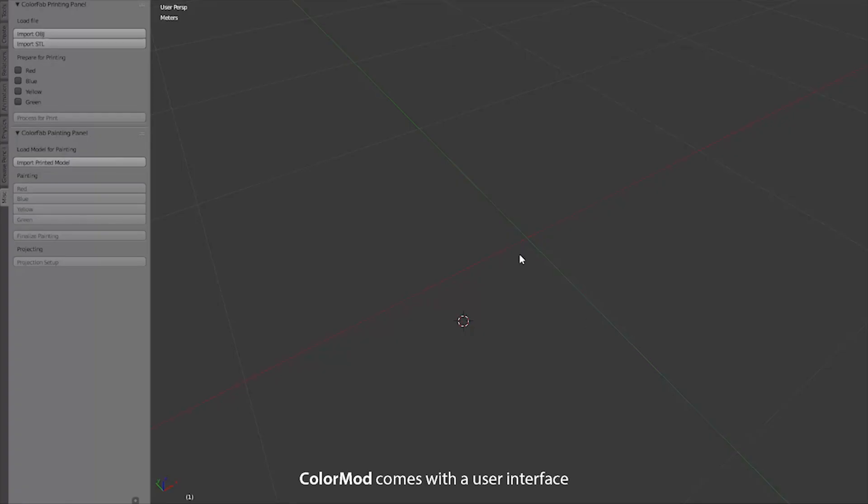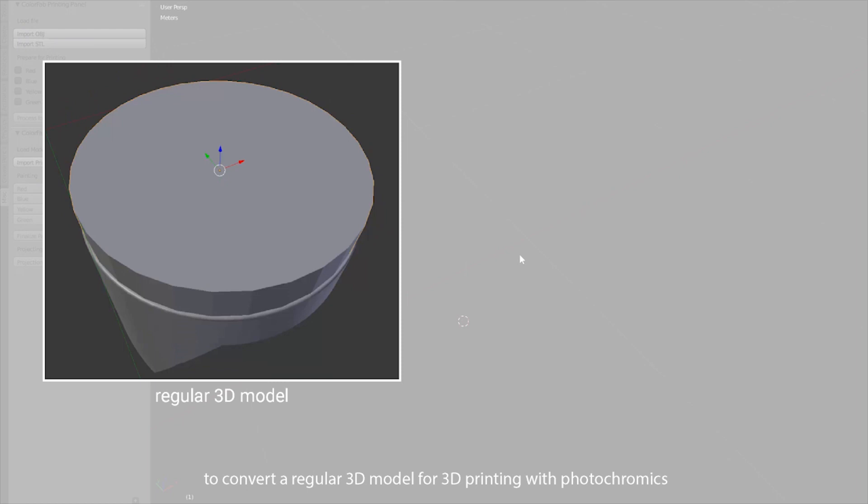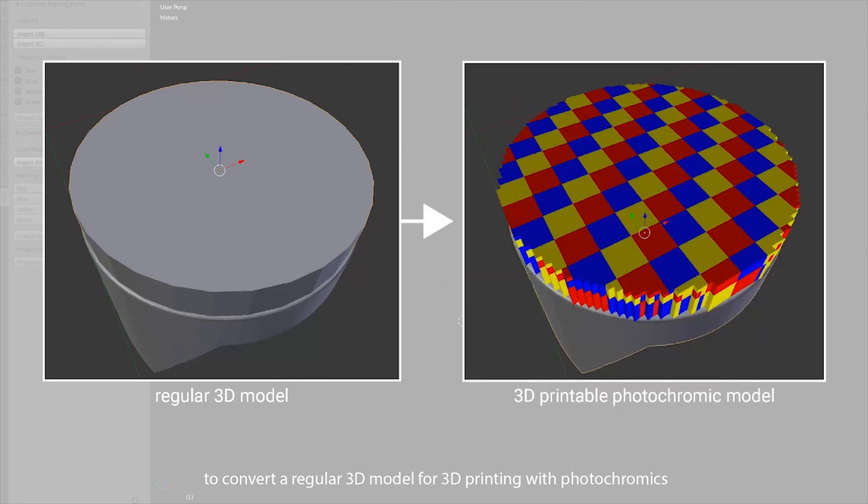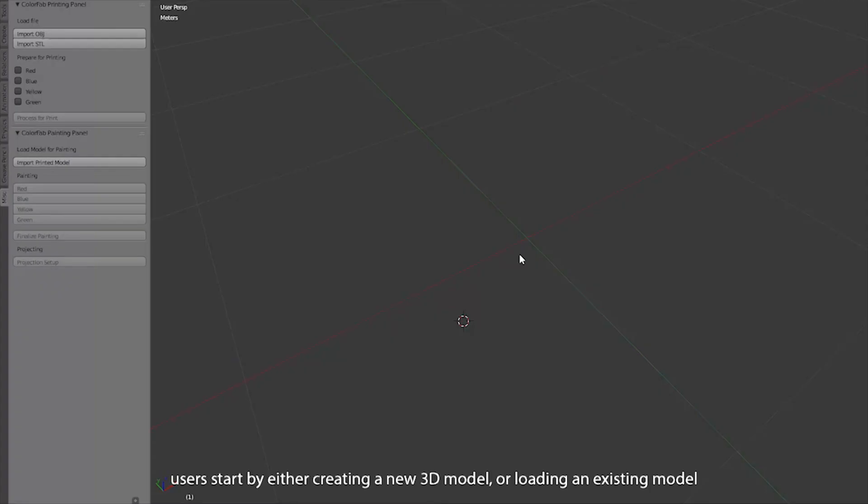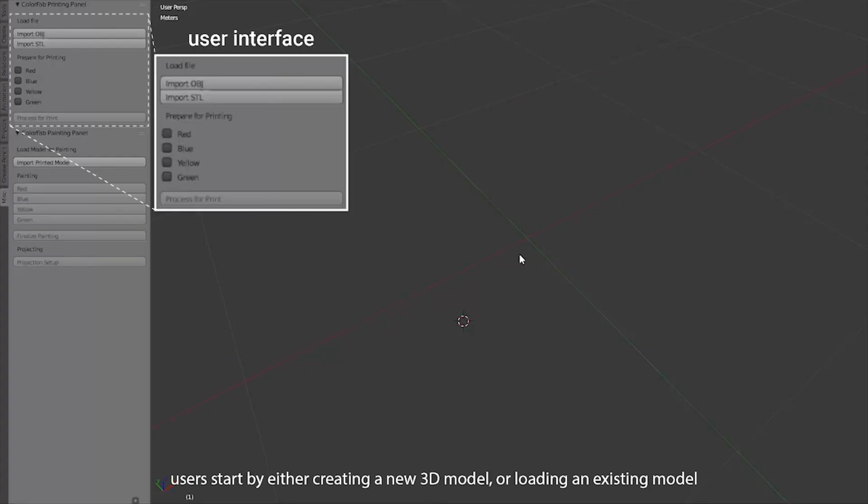ColorMod comes with a user interface to convert a regular 3D model for 3D printing with photochromics. Users start by either creating a new 3D model or loading an existing model.